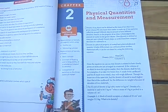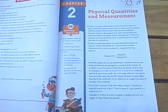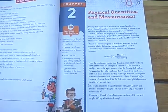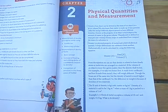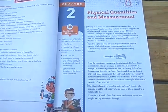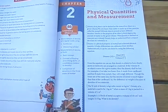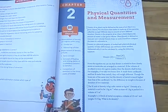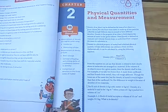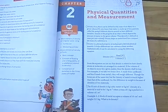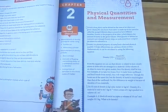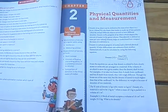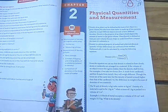If the volume of an object is more for a given amount of matter, then the density will be less. For example, take two boxes — box A and box B. Box A is made from cardboard and box B is made from metal. Both boxes are the same size, but the density of the metal is much higher than the cardboard.